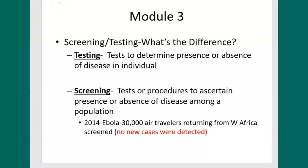When public health authorities are confronted with a communicable disease crisis, the first step is identification of the disease or pathogen, followed by screening and testing to find out who's been infected, how widespread the infection is, and to help design mitigation and treatment plans. Testing and screening are two different concepts: testing determines the presence or absence of disease in a particular individual, while screening refers to tests or procedures designed to ascertain the presence or absence of disease among a population.